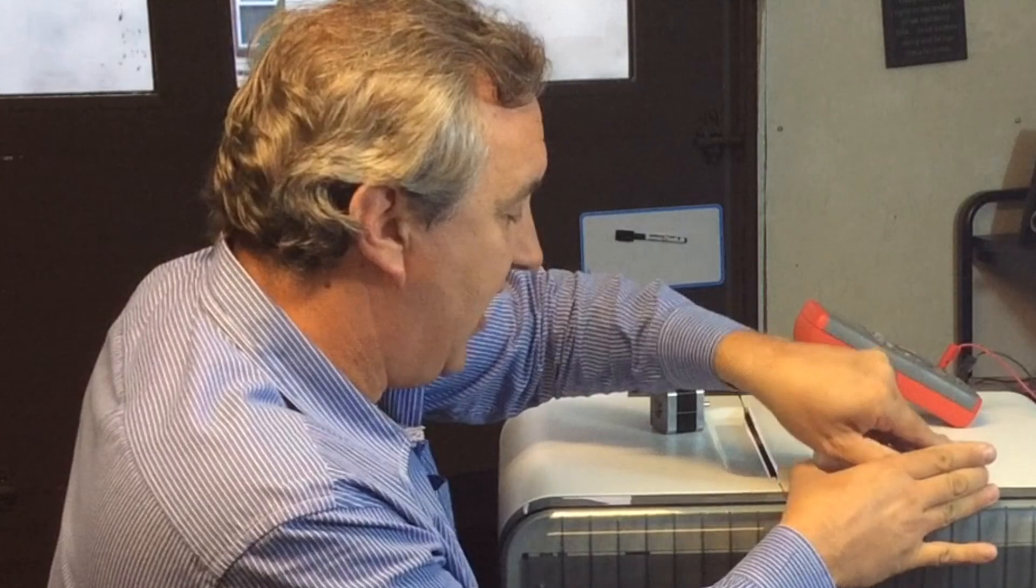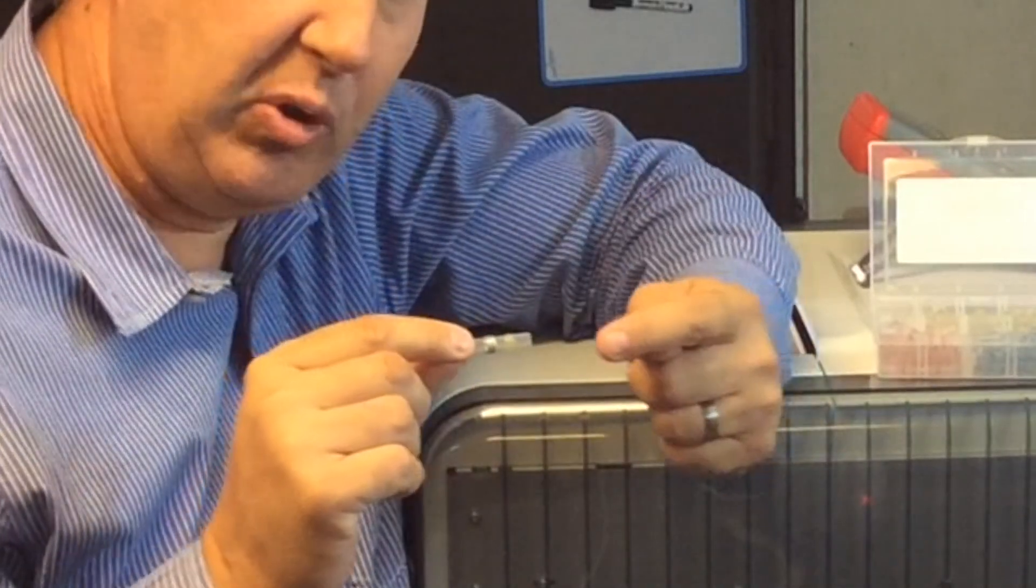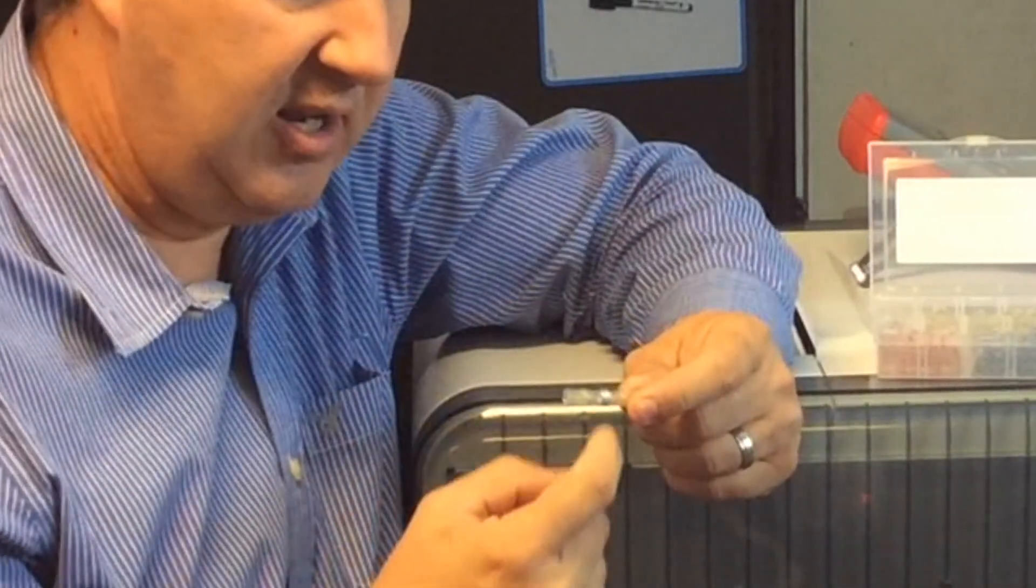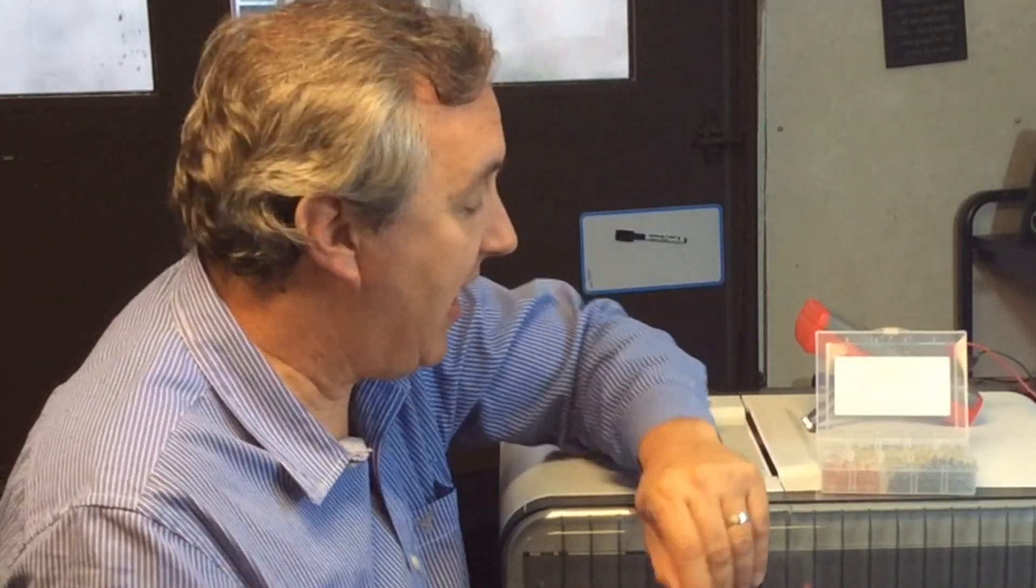You see what they are is they're actually shrink tubing with a center ring of solder. So you can put the wire in both ends, heat it up with the heat gun and it'll melt the solder and make the connection. And because they're clear you can see the connection and then it shrinks down around the wire. So it's very very handy. It's a one-step fix and they've got it for different sizes.